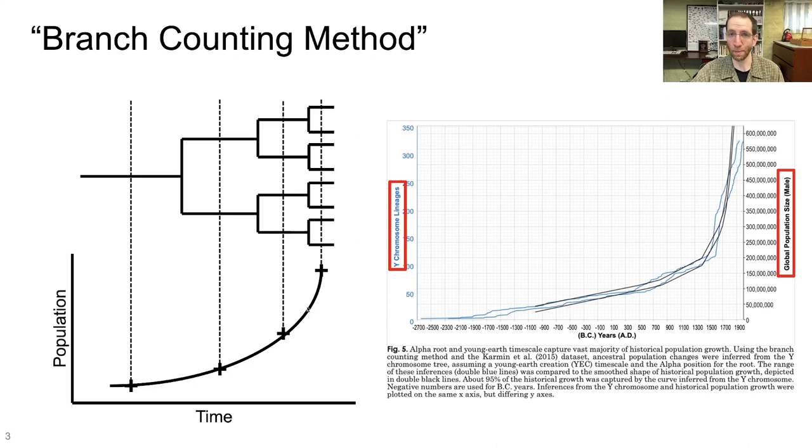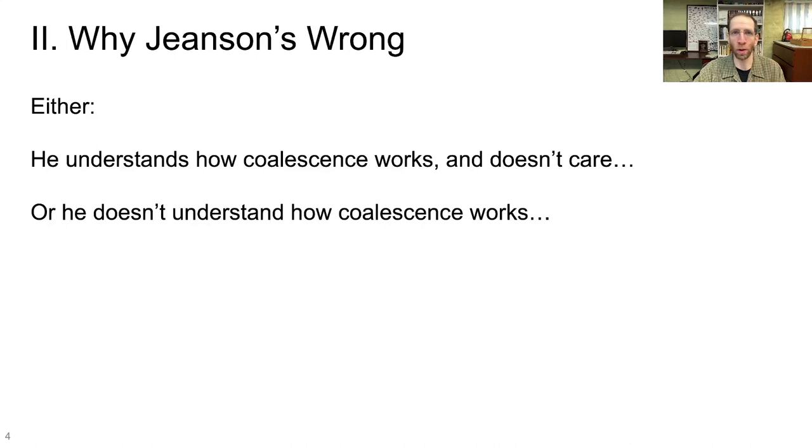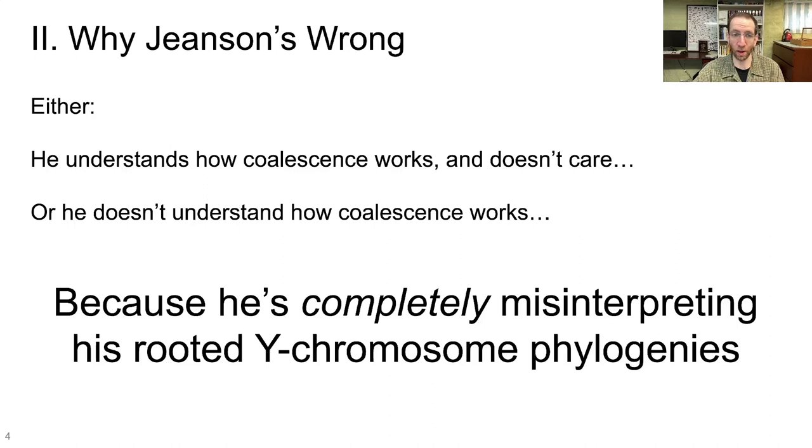So let's be very clear about one thing here right off the bat. Dr. Jeanssen is wrong when he does this. You can't do this. All right, so let's talk about why he's wrong. Either he understands how coalescence works and doesn't care, or he doesn't understand how coalescence works. It's one of those two things, because he's completely misinterpreting his Y chromosome phylogenies, and we're going to talk about why.